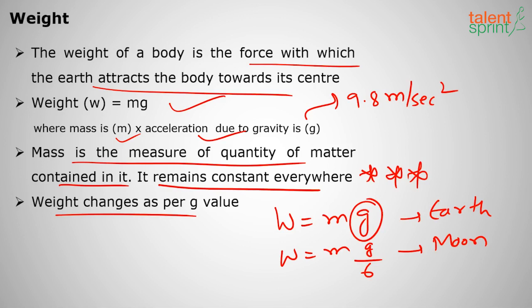Mass remains the same while weight changes according to the g value, because different celestial bodies have different g values. Higher the mass of the body, higher the g value; lower the mass, lower the g value. The Moon's size is smaller than Earth's, so it has a g value of g/6 — one-sixth of Earth's g. Earth has higher mass and therefore higher g.